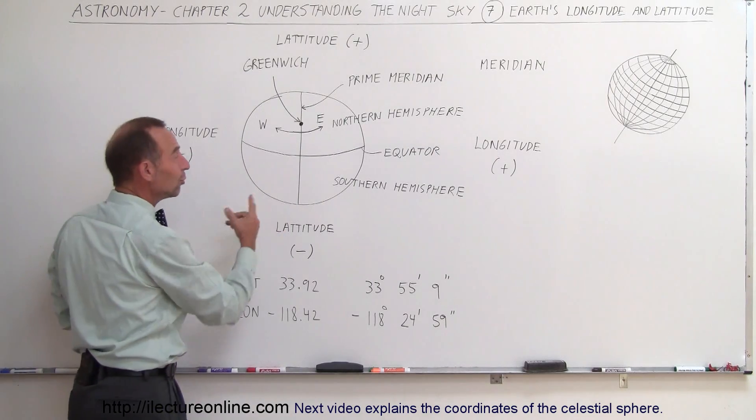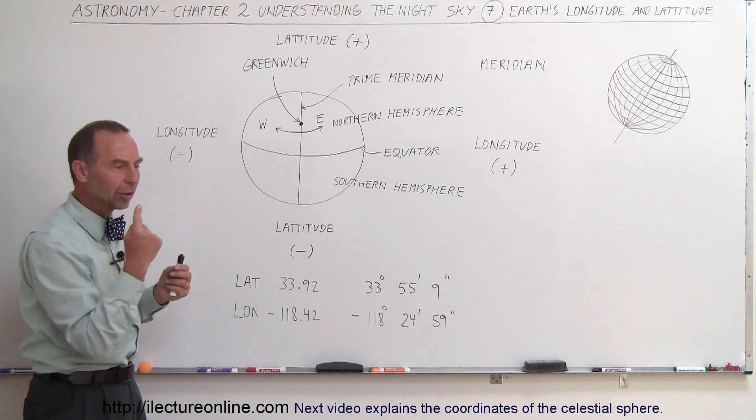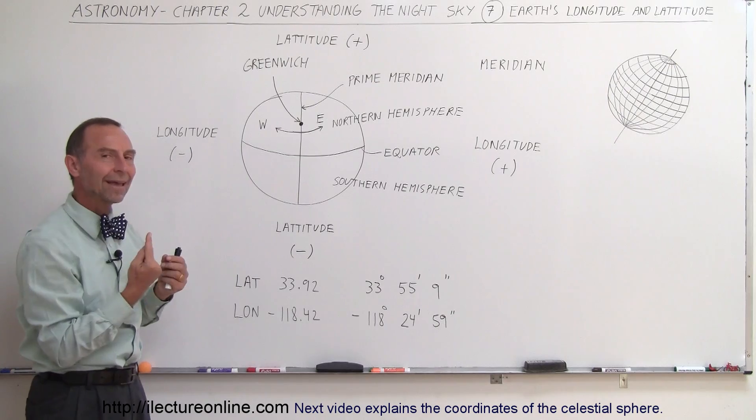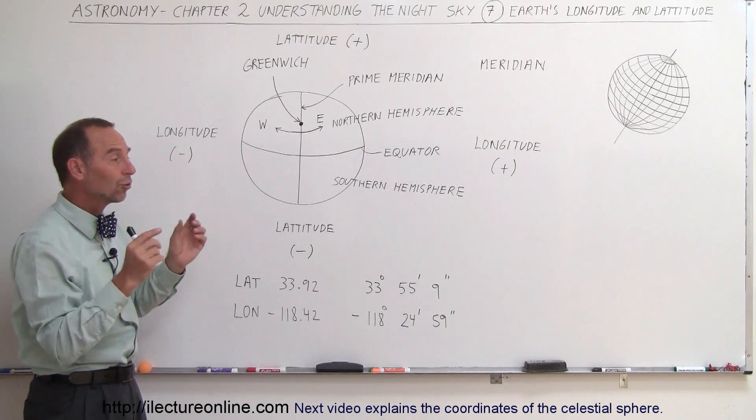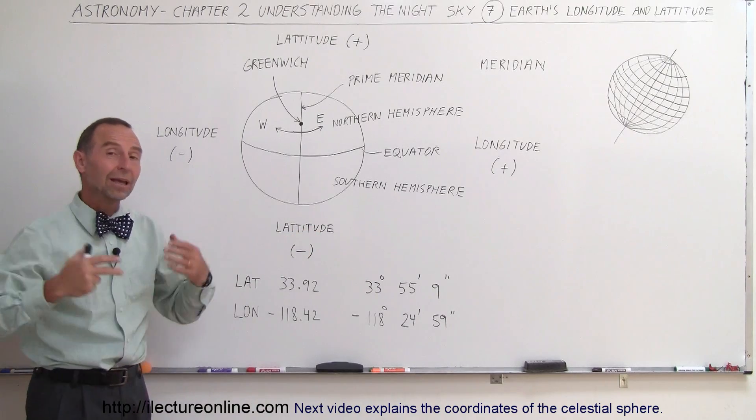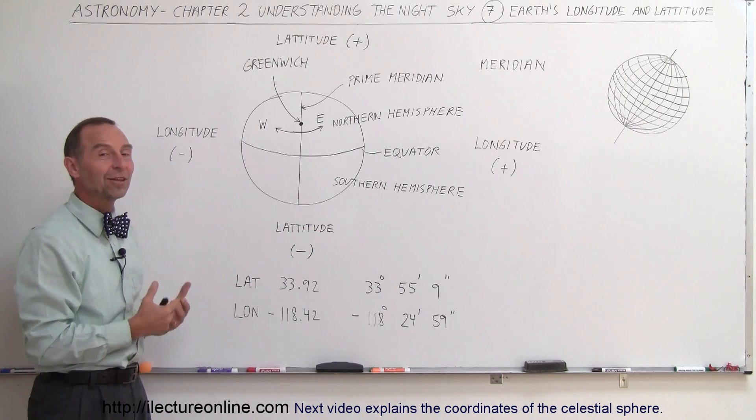But as far as finding the longitude, we have a more difficult problem here because the Earth is constantly rotating on its axis, so things will always be in a different position throughout the day. And it's also revolving around the sun, so it will be in different positions throughout the year.